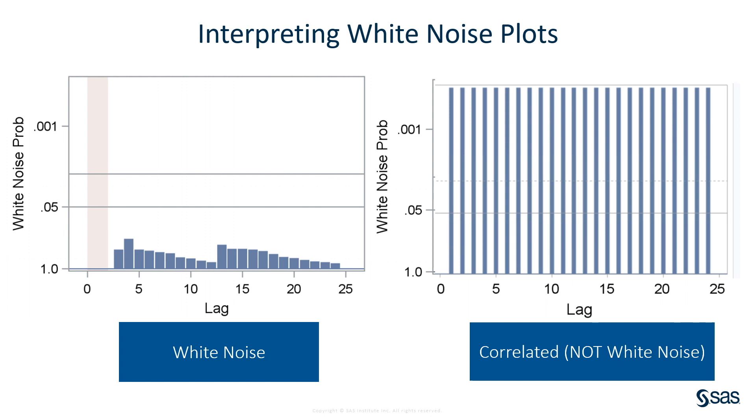Finally, let's look at our white noise plots. Here we're plotting the white noise probability. And you can see it goes from one down at the horizontal axis up to 0.001. So higher is a lower number, and you can see it's on a log scale. The graph on the left indicates white noise. The graph on the right indicates that we do not have white noise. If the series is not white noise, you can try an autocorrelation model, such as an AR1, an MA1, or a low-order mixed ARMA model. You can also use the ACF, PACF, and ICF plots to help you figure this out.